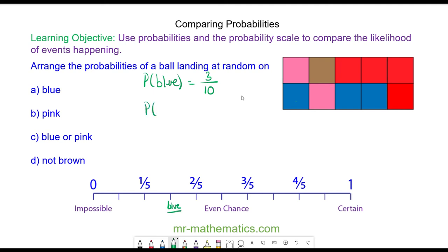The probability of landing on a pink square. Well, there are two desired out of ten in total. And we can simplify this to make one fifth. So the likelihood of landing on a pink section would be here at one fifth.